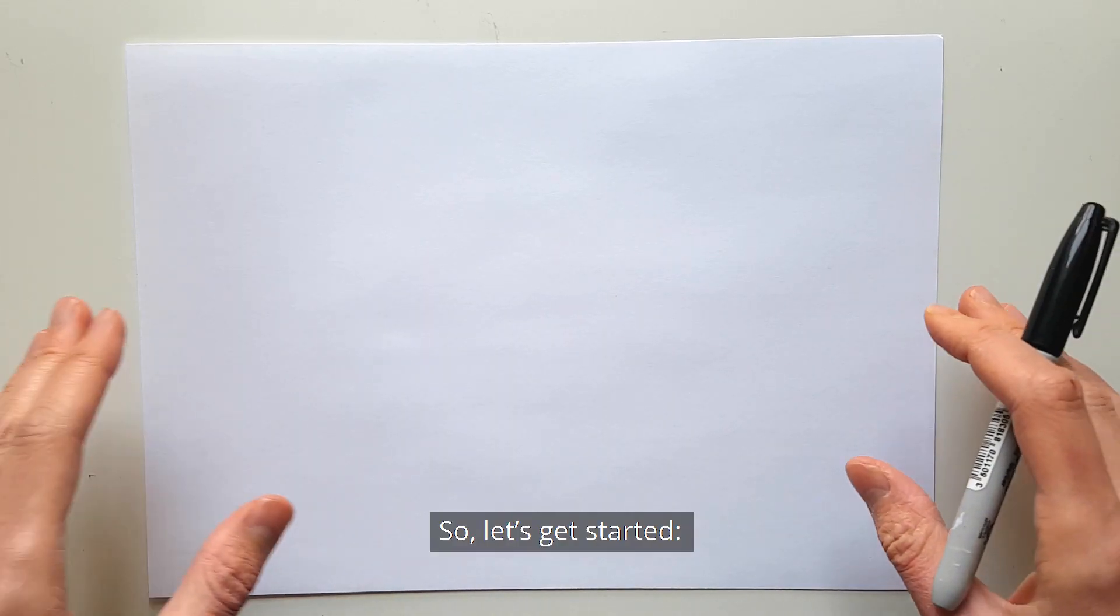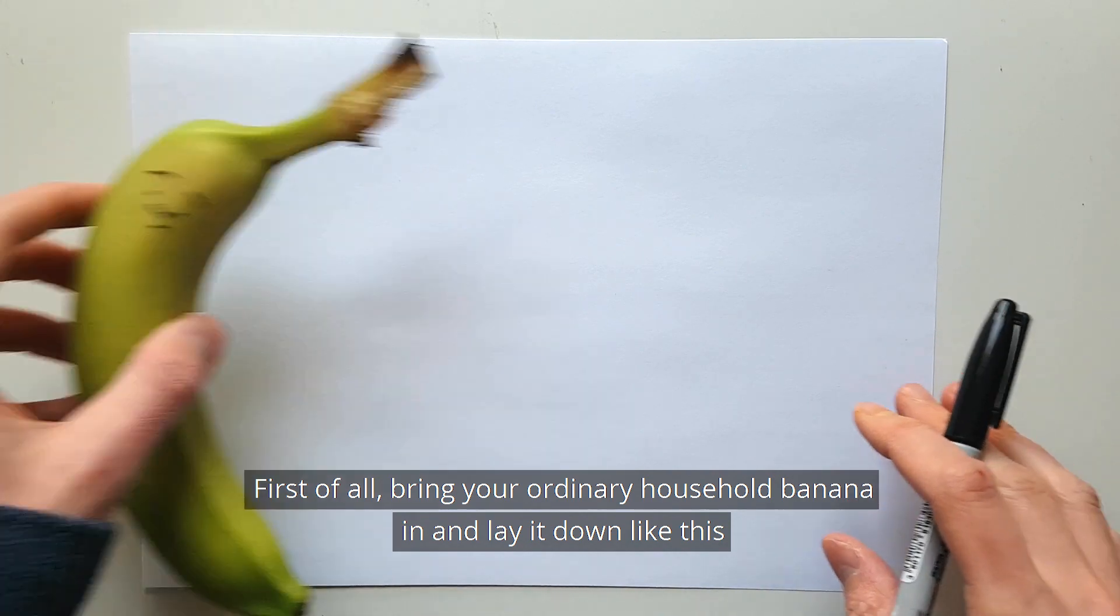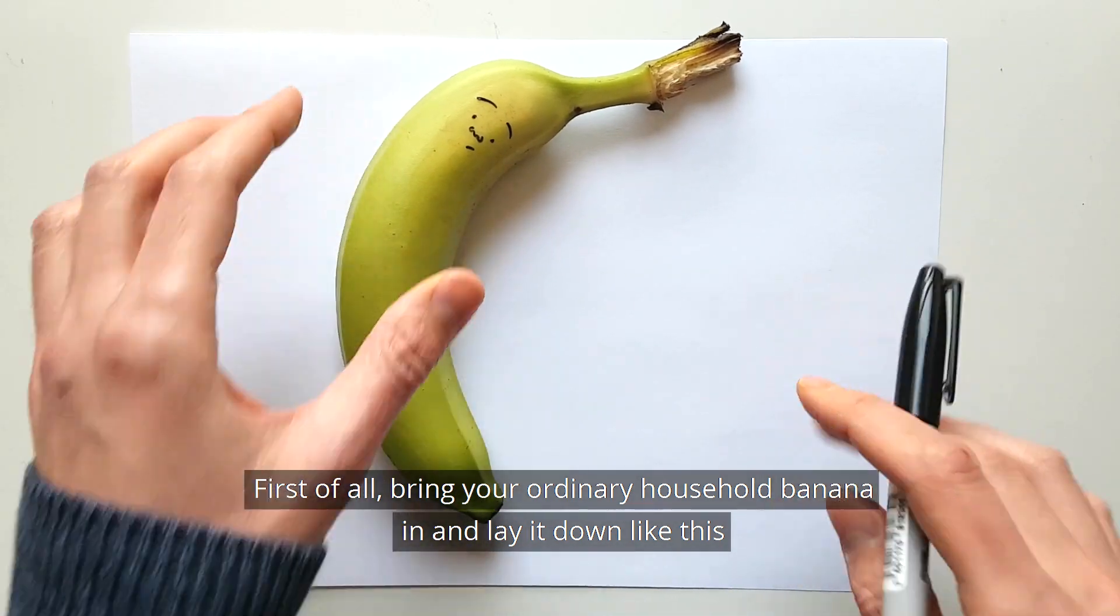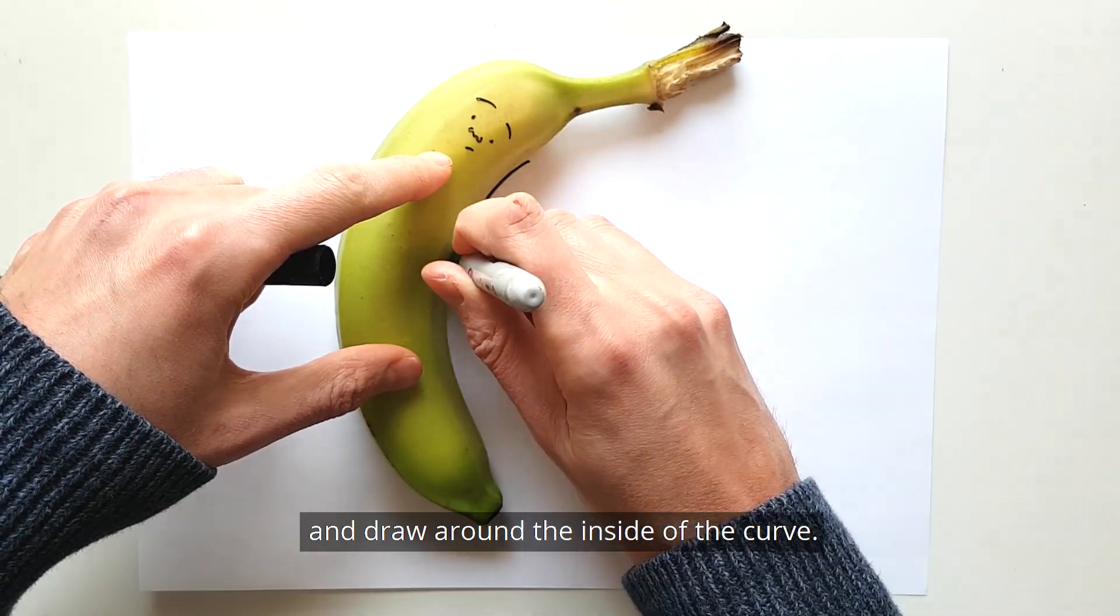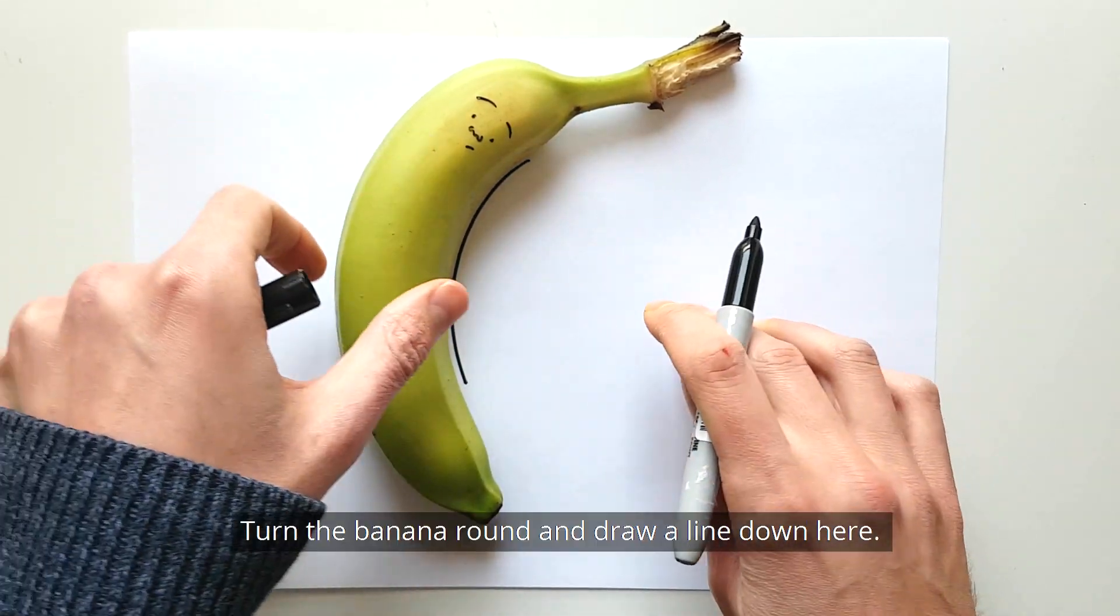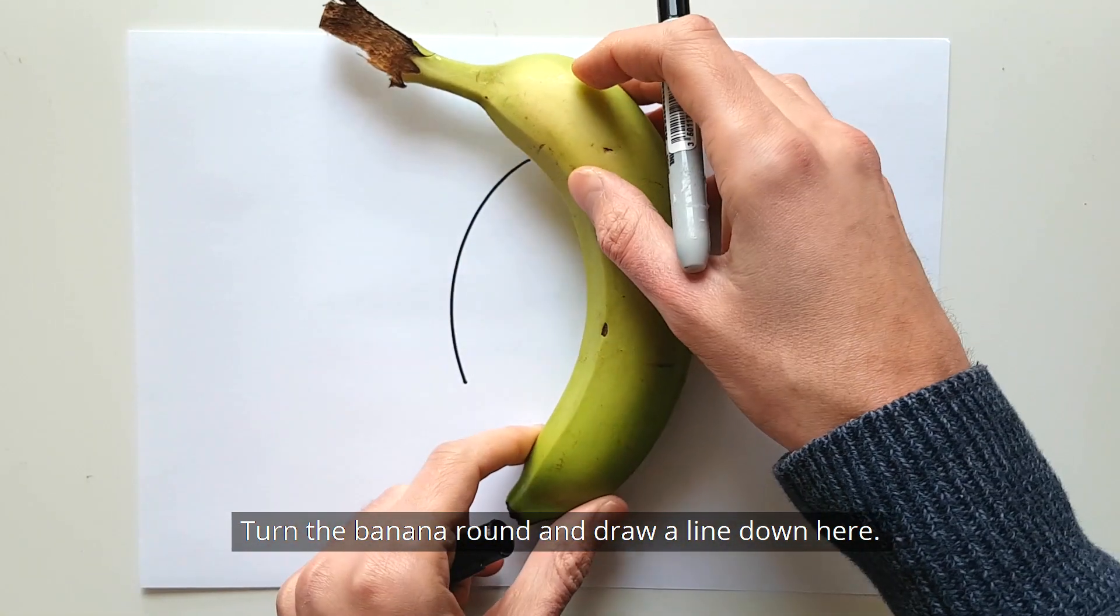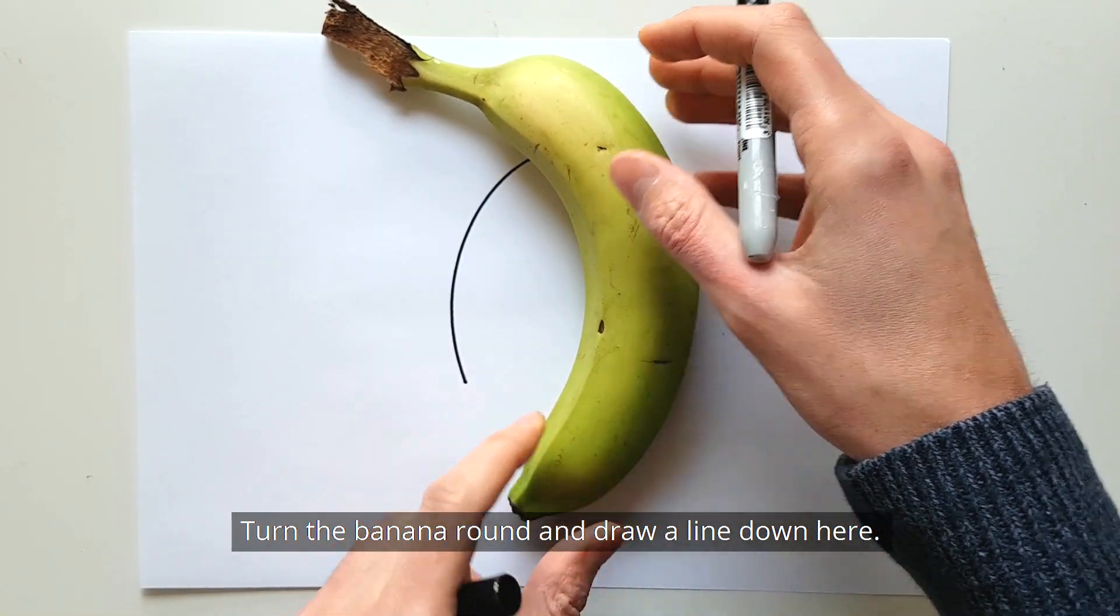So let's get started. First of all, bring your ordinary household banana in and lay it down like this. You want to draw around the inside of the curve like this, turn the banana round, and draw a line down here.